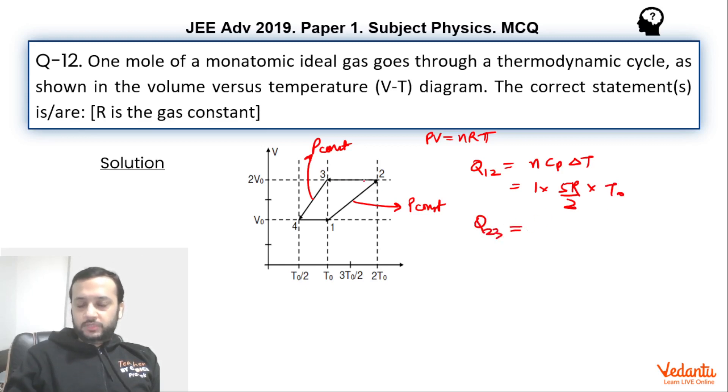Q23, if we talk about, Q23 is simply again n CV delta T. N is 1. CV for monatomic is 3R by 2. Delta T will be from 2T0 to T0, that means minus T0.